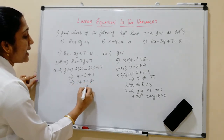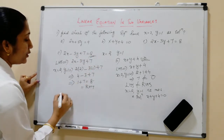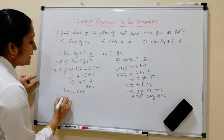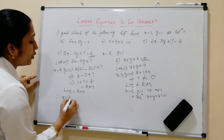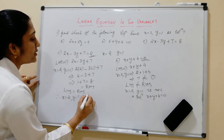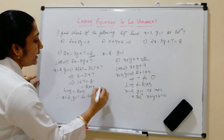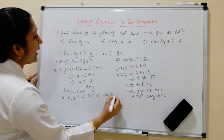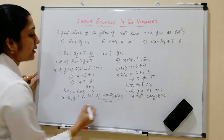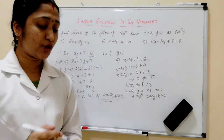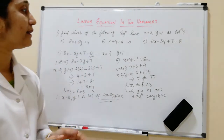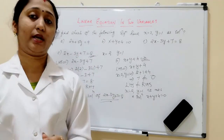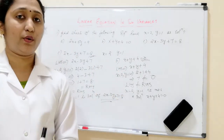That is equal to RHS, which is 8. So LHS equals RHS. Therefore, X equal to 2 and Y equal to 1 is a solution of the linear equation 2X minus 3Y plus 7 equal to 8. I hope you all understood how to check whether a variable's value is a solution or not in a linear equation.